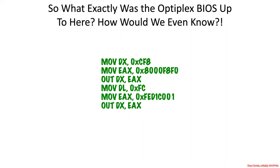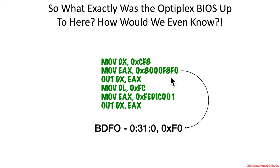Let's return to this example code from the Optiplex 7010 BIOS and try to fully understand what exactly was going on. We understood that there's a particular format to the CF8 register, so values placed in it will be parsed according to an 8-bit offset, a 3-bit function, a 5-bit device, and an 8-bit bus. We decoded that before to bus, device, function, offset: 0, 31, 0, F0.